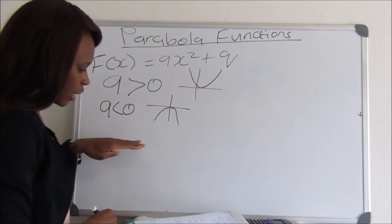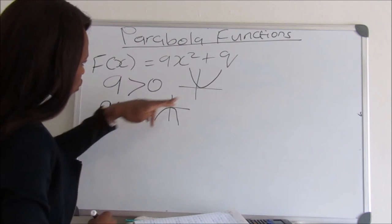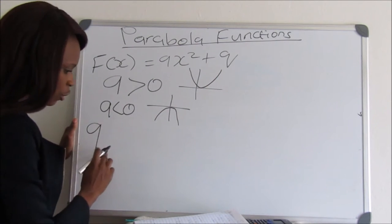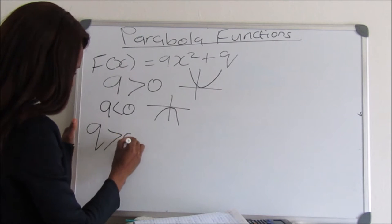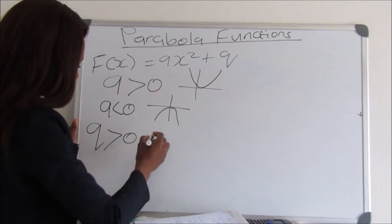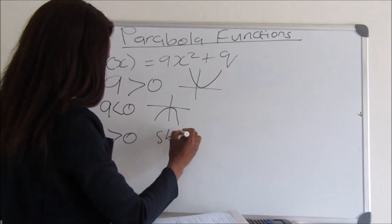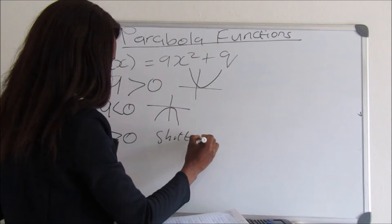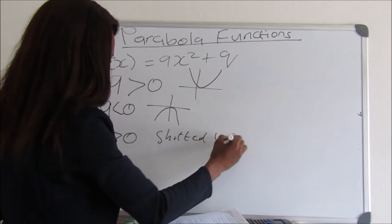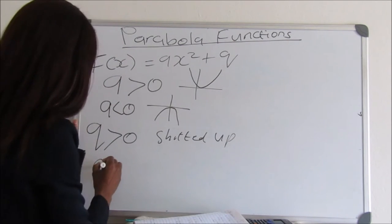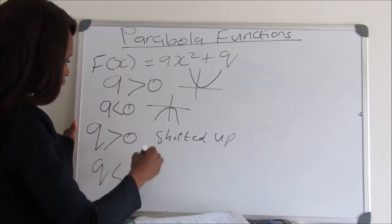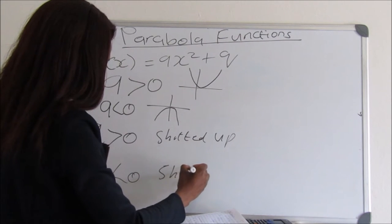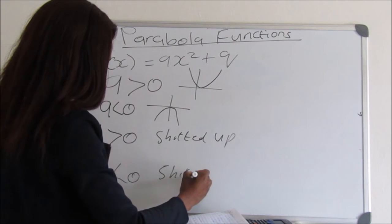Another thing to take into consideration is q. If your q is greater than zero, then the graph will be shifted up. And if q is less than zero, then the graph will be shifted down.